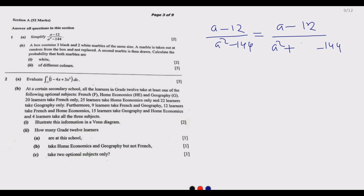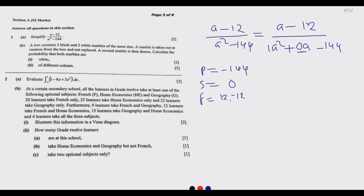The zero coefficient of a means there is no middle term. We treat the denominator as a quadratic where the product is 1 times negative 144, which equals negative 144, and the sum is zero. Since the sum is zero, we look for a perfect square: the square root of 144 is 12. Since the product is negative, we use positive 12 and negative 12, because 12 plus (negative 12) equals zero, and 12 times (negative 12) equals negative 144.